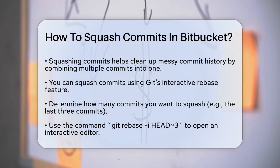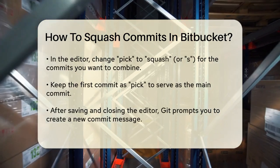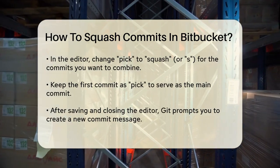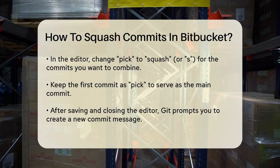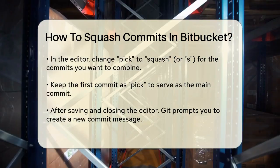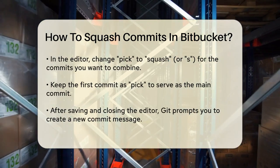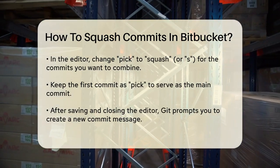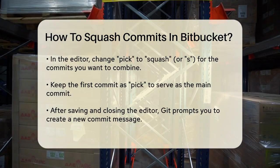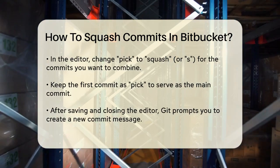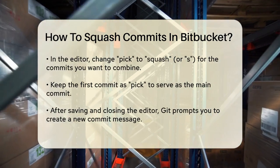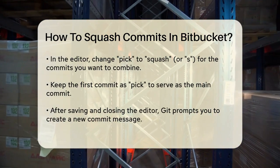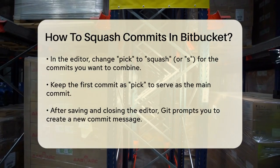This will open an interactive editor with a list of the last three commits. In this editor, you'll see each commit prefixed with 'pick'. To squash commits, change 'pick' to 'squash', or just 's' for short, next to the commits you want to combine. Leave the first commit in the list as 'pick', which will be the commit all others are squashed into.